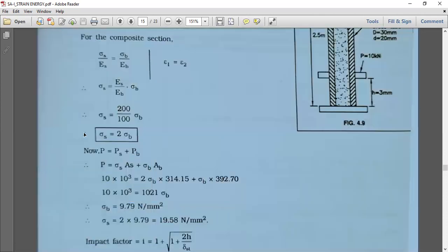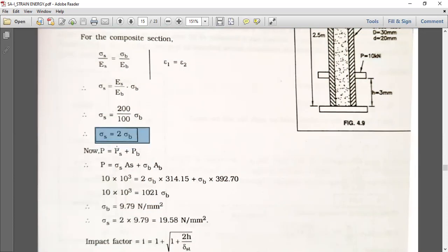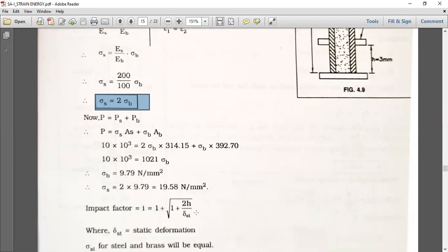Putting this value in the equation, we can also find sigma S equals 19.58 Newton per mm square.